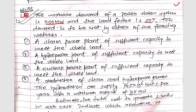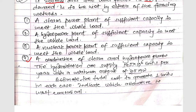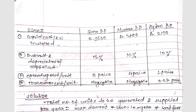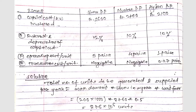The first method is a steam power plant of sufficient capacity to meet the whole load. The second is a hydro power plant of sufficient capacity, the third is a nuclear power plant of sufficient capacity, and the fourth is a combination of steam and hydro power plant, where the hydro station can supply 175×10⁶ units per year with a maximum output of 75 megawatt. We have to estimate the total cost to generate one unit in each case and indicate which alternative is most economical.